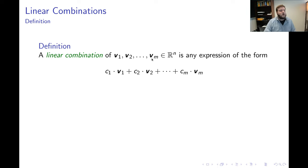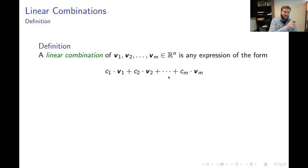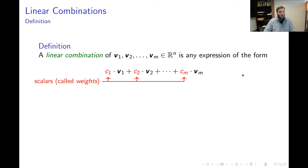A linear combination of these vectors is any expression where we're adding a bunch of terms, and every term is exactly one of the vectors from the list scaled by some scalar. We've labeled the scalars here as c1, c2 through cm. I like to use the term weights when talking about those scalars in a linear combination.